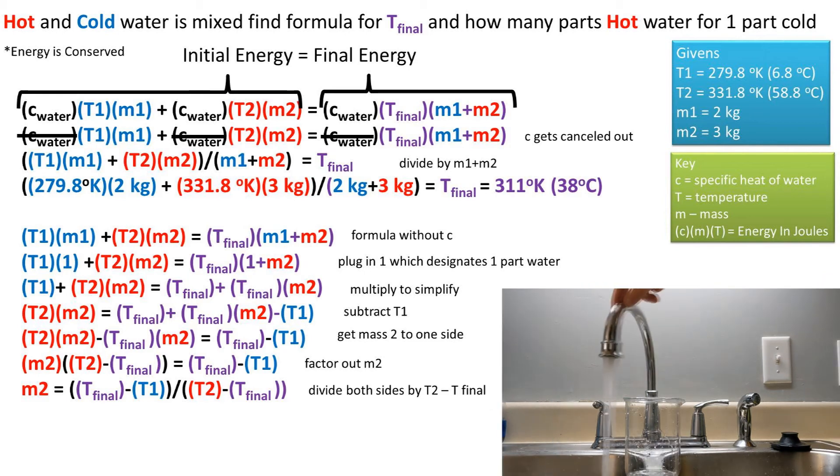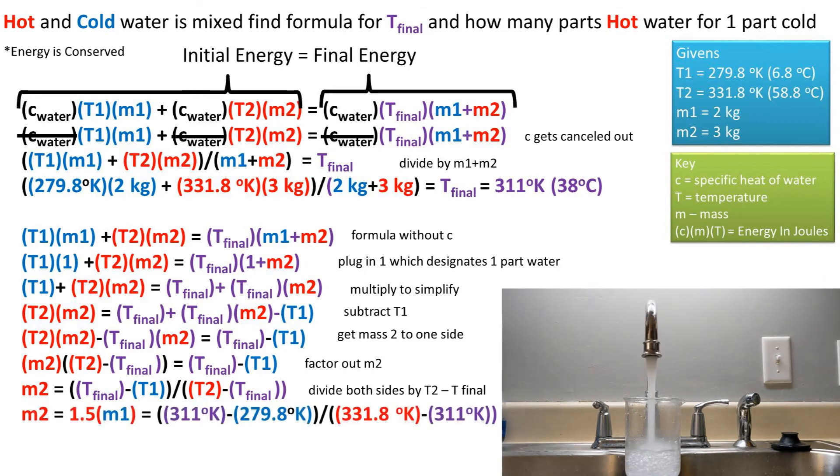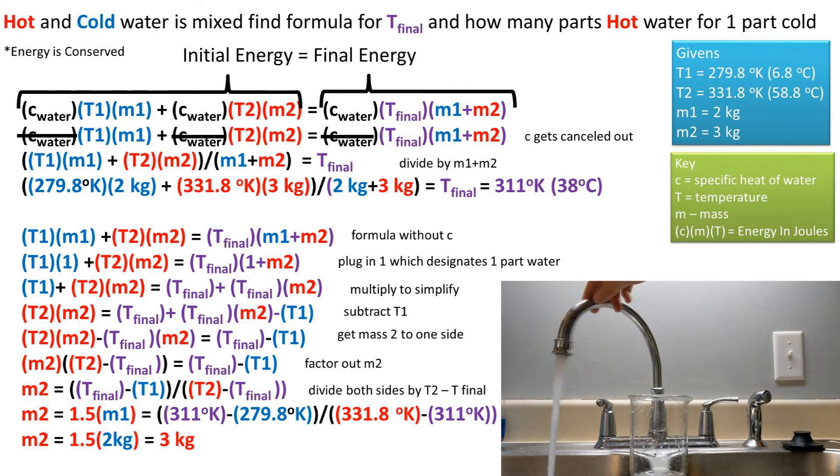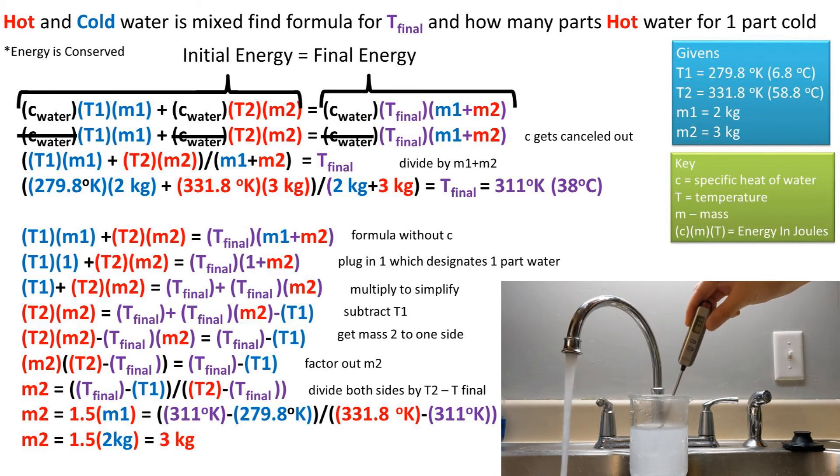We're left with this displayed equation which is equal to m2. Plugging in our givens, we are left that we will need 1.5 times the mass of cold water of hot water to get the desired temperature of 311 K. We can then plug our mass of 2 kg for m1 into this equation, and we get that we need 3 kg of hot water in order to get the right temperature.